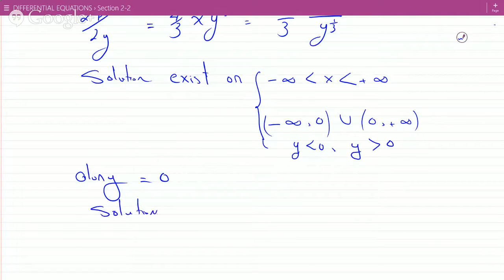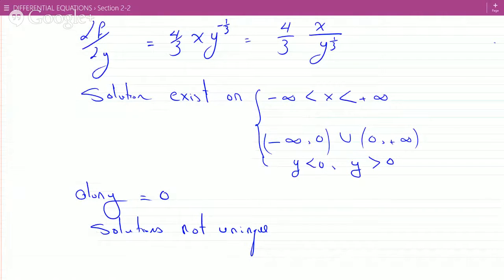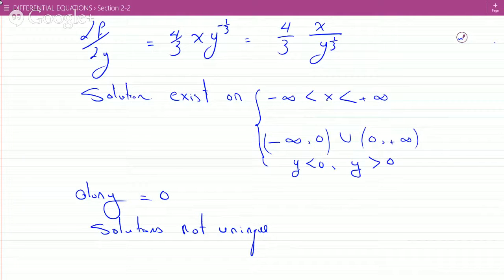Solutions are not unique because the partial is not defined at y equals zero. Why are we using the second rule here?